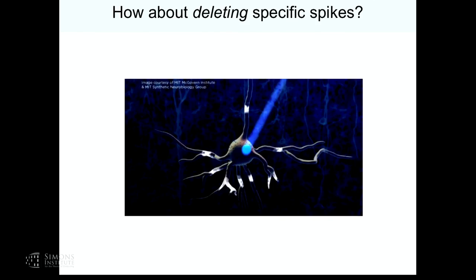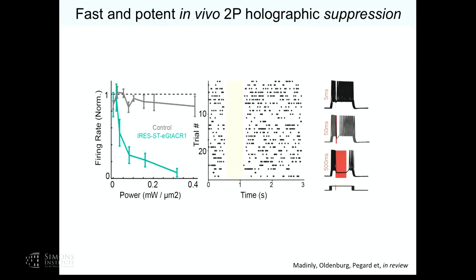As a slight tangent, we also used an anion channelrhodopsin to delete specific spikes. We engineered it to avoid toxicity, and the same microscope can suppress spikes of a cell rapidly within a few milliseconds and very potently.